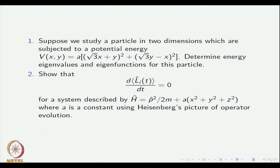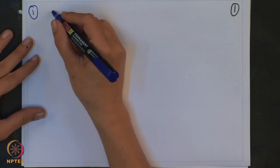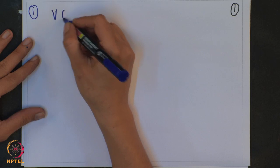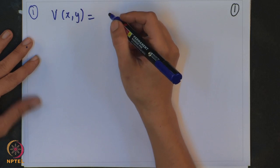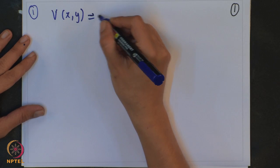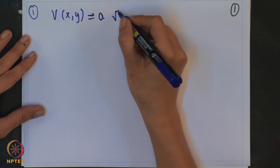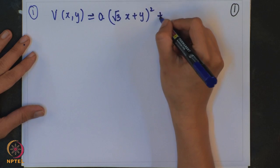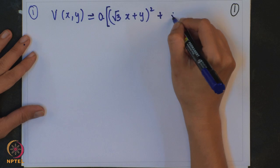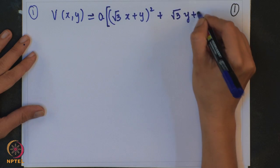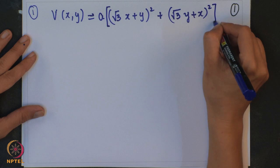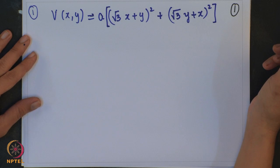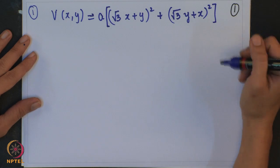In order to solve this question, we will try to simplify the potential given to us. The potential in problem 1 is a function of x and y, hence it is a 2-dimensional potential. It is of the form (√3x + y)² + (√3y + x)². For the harmonic oscillator, just try to recollect the form of the potential while solving this problem.